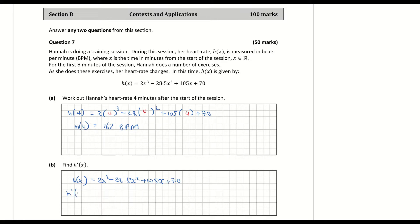Differentiating that, I multiply the power down and get 6x squared. Multiplying 28.5 by 2 gives 57x reduced by one power. Differentiating 105x gives 105, and I drop the constant. So h dash of x is equal to 6x squared minus 57x plus 105.